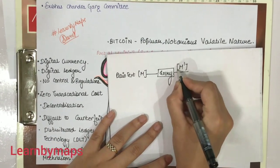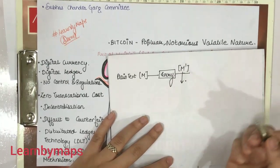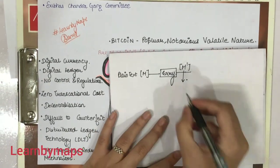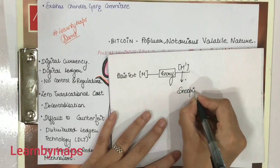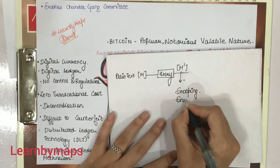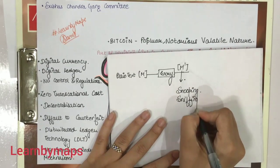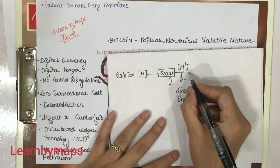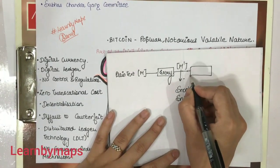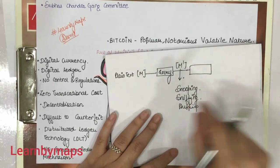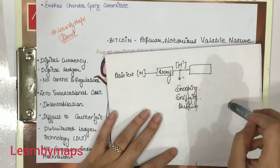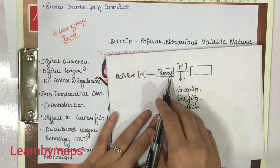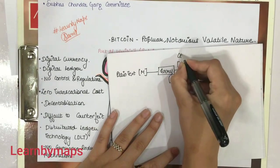Now what is this M prime? This is your codified version which is very difficult to predict, hack, or snoop. Snooping, sniffing, and phishing — these are important terms you can search on the internet. And you will also see on WhatsApp when you are in a chat, there is your end-to-end encryption. So when data is encrypted, we call it ciphertext.